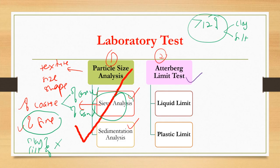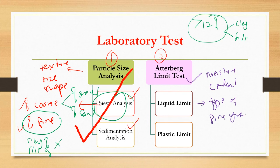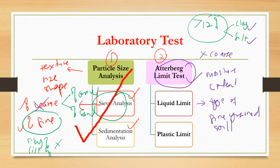From the Atterberg limit test, the determination is actually based on moisture content, and you are looking for the types of fine-grained soil — is it clay or silt, which one is dominant? There is nothing to do with coarse; in the Atterberg limit test, you are not talking about coarse-grained soil. You just want to know what are the types of fine-grained soil.